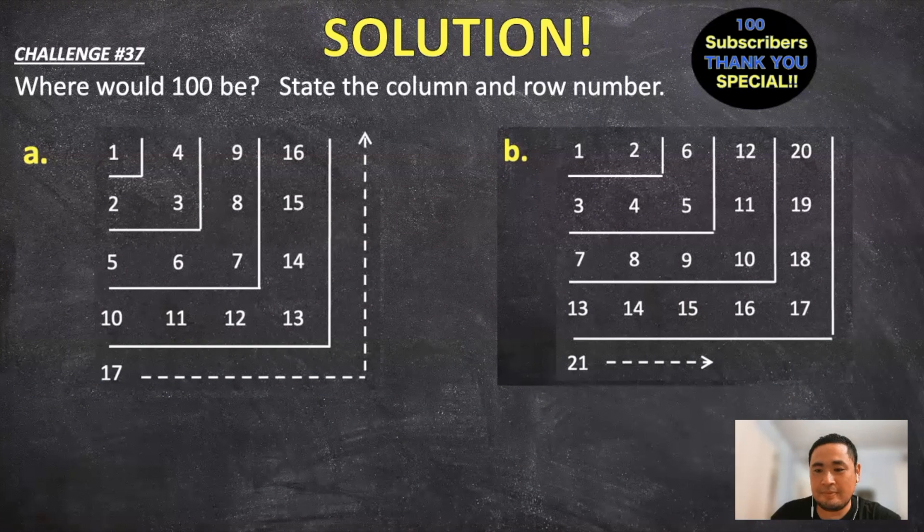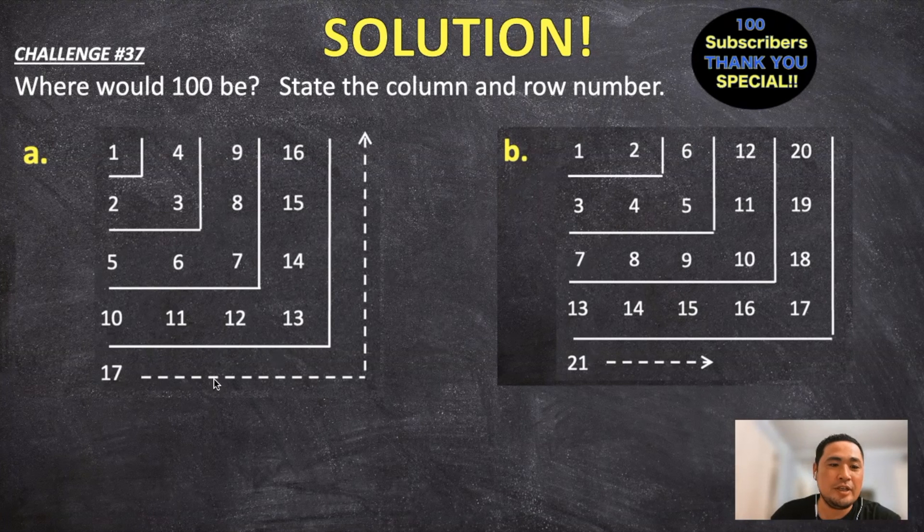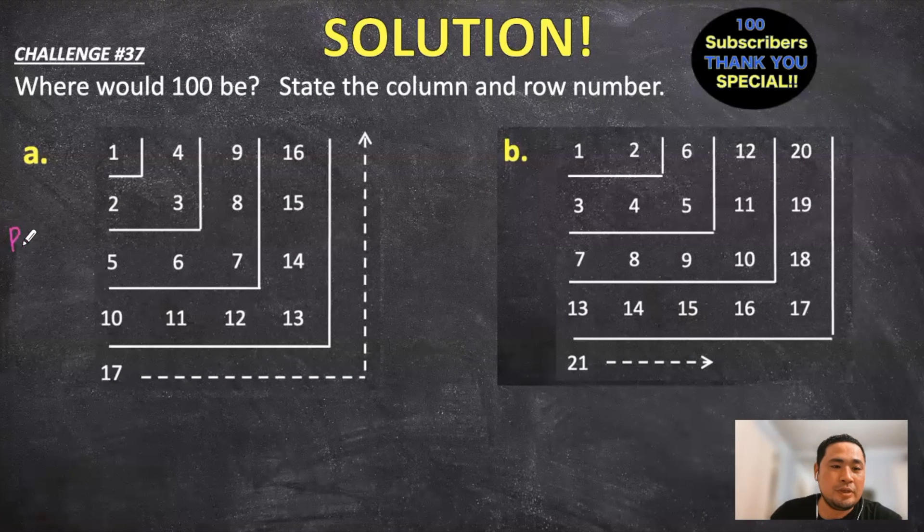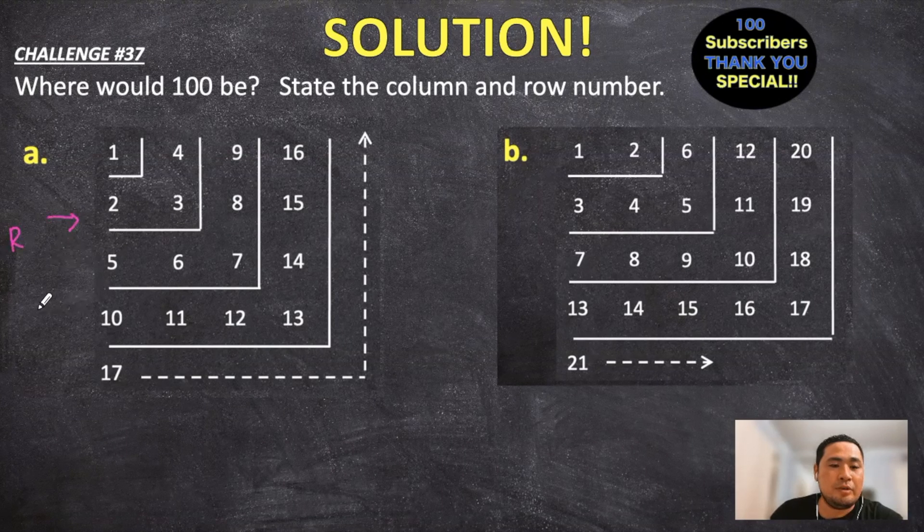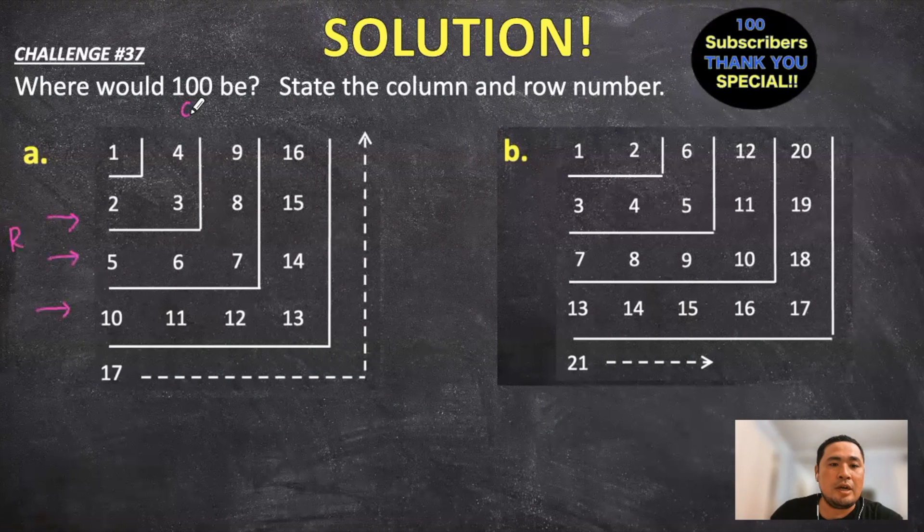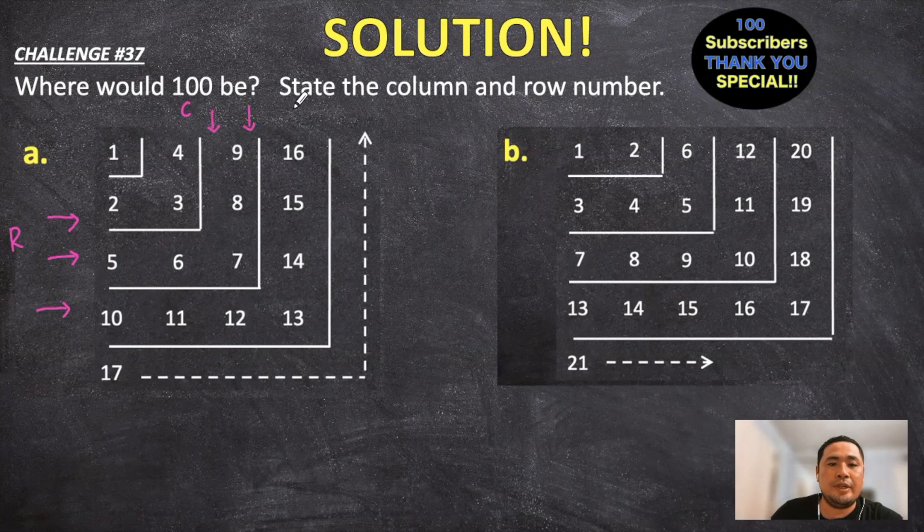Now let's start by clarifying which ones are the rows and the columns so we can properly answer the question. The rows are the ones going horizontally across and the columns are the numbers going down.